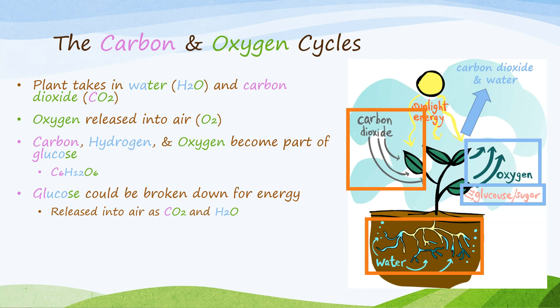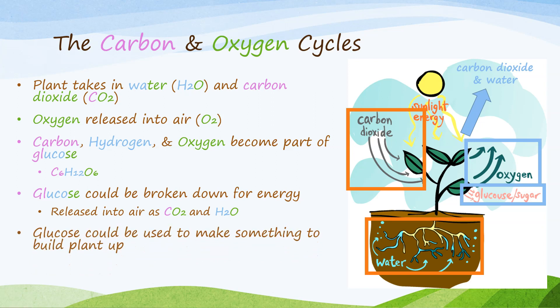Or maybe the glucose is used inside the plant to help build it up — so it is used to make something else and becomes part of the plant. If the carbon and oxygen are now part of the plant, where could they travel next?